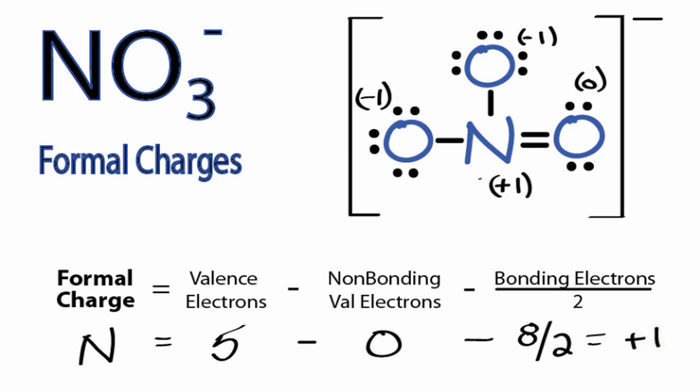We'd like our formal charges to be as close to 0 as possible. In this case, of course, we'll have at least a negative 1 since it's a negative ion. Nitrogen can only have 8 valence electrons. We cannot violate the octet rule with nitrogen. So this is pretty much where we're at with this Lewis structure.